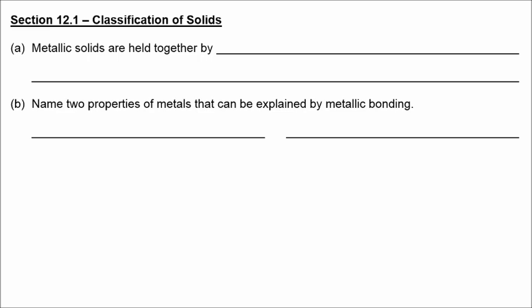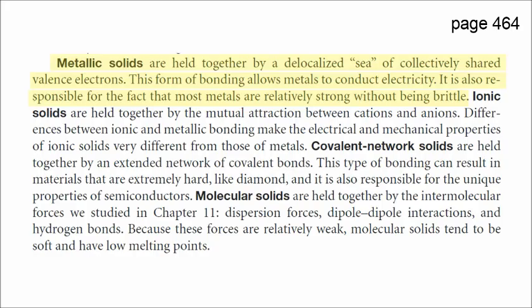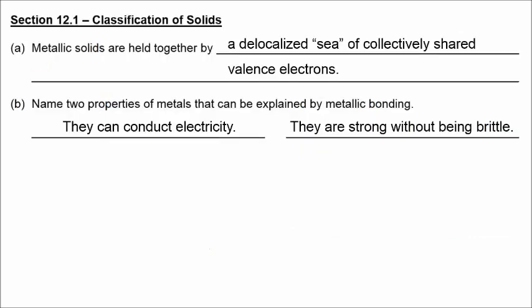We're going to take a look at Metallic Solids first. On page 464, Metallic Solids are held together by a delocalized sea of collectively shared valence electrons. This form of bonding allows metals to conduct electricity. It is also responsible for the fact that most metals are relatively strong without being brittle.